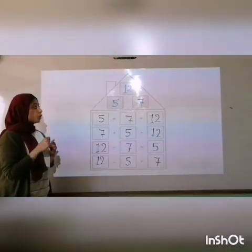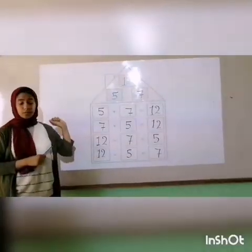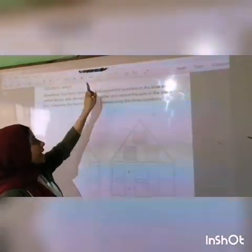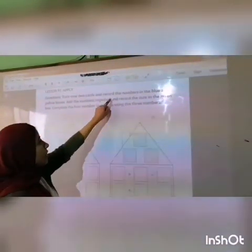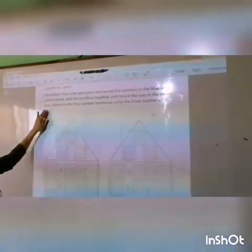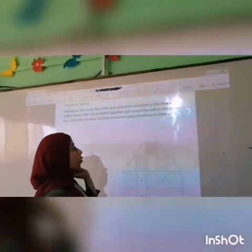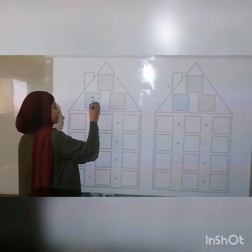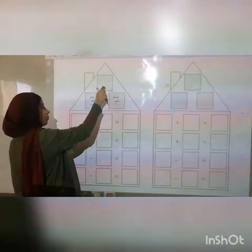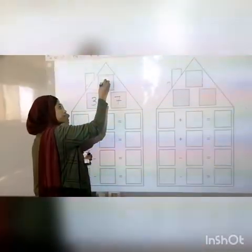Let's do it in our school book. Open your school book to lesson 91. Turn over 2 cards and record the numbers in the blue and yellow boxes. Add the numbers together and record the sum in the green box. Complete the 4 number sentences using the 3 numbers. Using the numbers 3 and 7, we write 3 and 7 in the boxes. The top one is the sum: 3 plus 7 gives me 10.